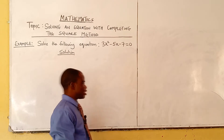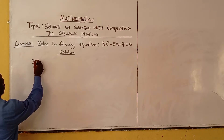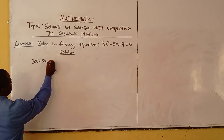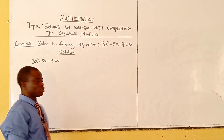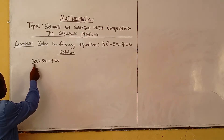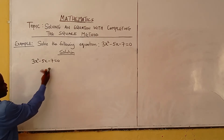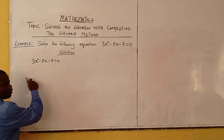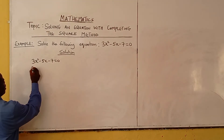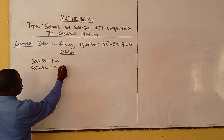Now the first thing to do — you can see I have 3x² minus 5x minus 7 equals 0. The first thing to look at is that we need to remove the coefficient of x². But before we do that, let's take the constant to the other side — to the right-hand side. So we have 3x² minus 5x equals 7.